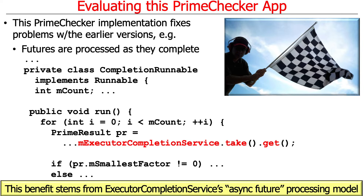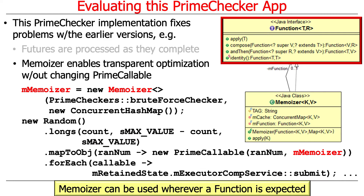Looking at the code, this version has the benefit of using an asynchronous future processing model as opposed to a synchronous one, so it's going to be more responsive. Another nice thing is that we're able to enable transparent optimization without changing the prime callable — we create a new memoizer and plug it in, allowing the memoizer to be used wherever a function is expected, changing behavior without modifying the prime callable itself.